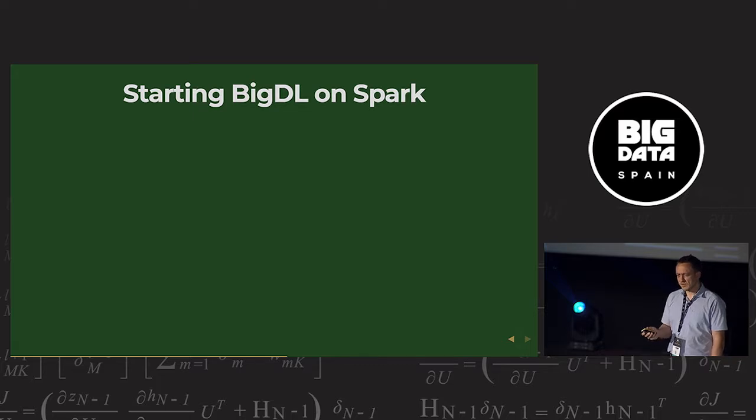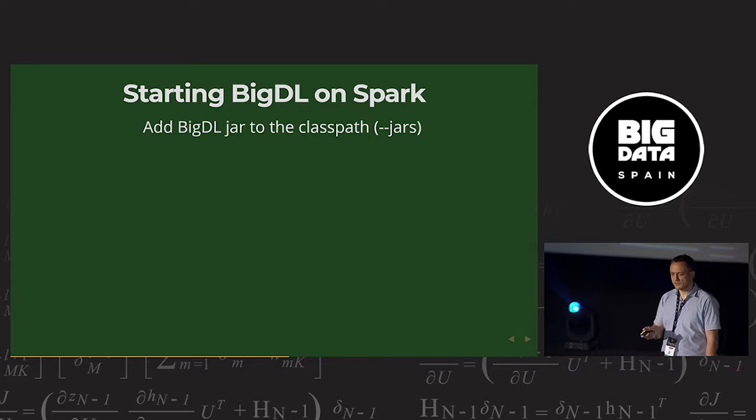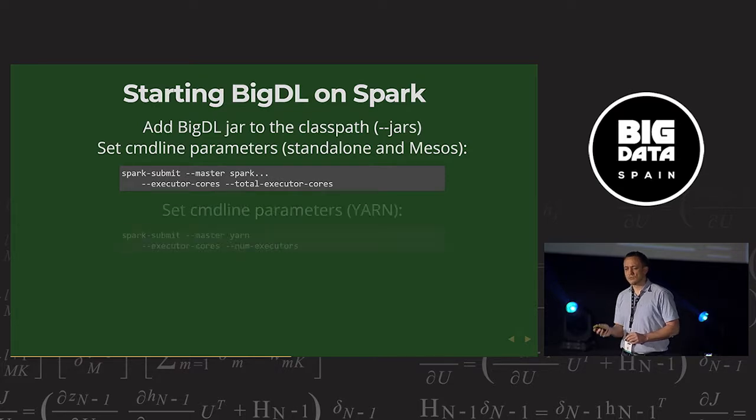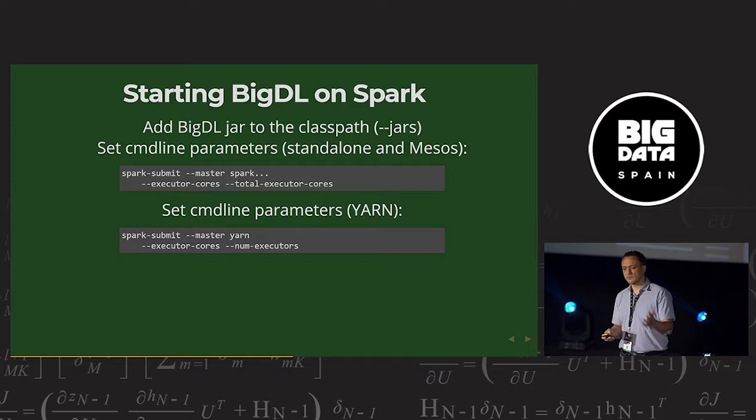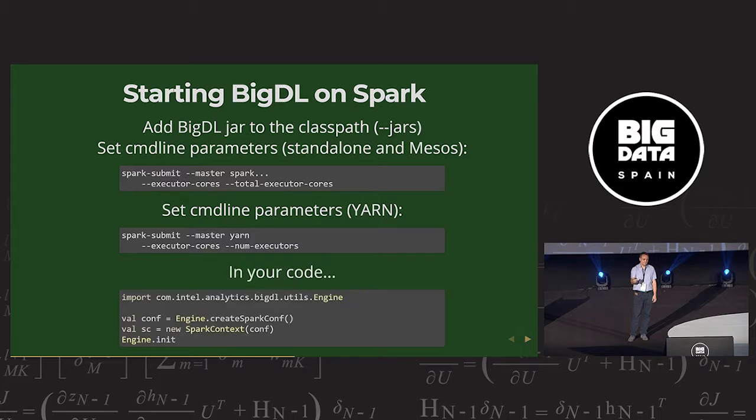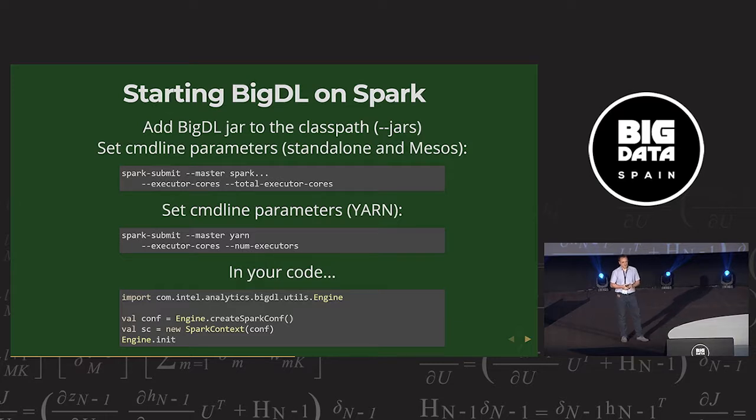To start it on Spark, you again add it to class path. You can use the jars option. And then you set command line parameters to which Big DL will look at to determine the number of cores and executors that you have. Executor cores and total executor cores. And on Yarn, you use executor cores and num executors. Those are important for Big DL. And in your code, you need to create the Spark config yourself. And then you create a Spark context using this config created by the Big DL's engine. And then again, call engine init. So pretty simple.